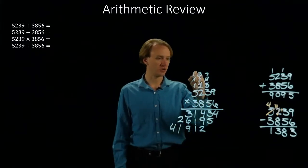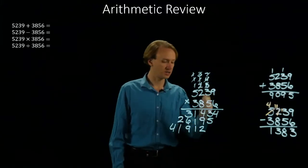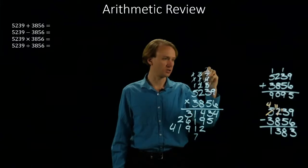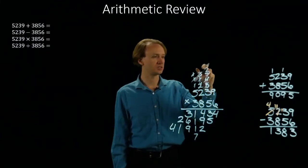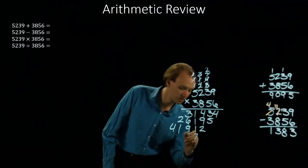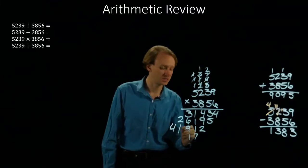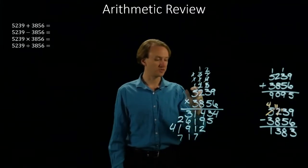And finally I'll repeat the process again for the 3. So 3 times 9 is 27. Write down the 7, carry a 2. 3 times 3 is 9, plus 2 is 11. 1 carry a 1. 3 times 2 is 6, plus 1 is 7. 3 times 5 is 15.